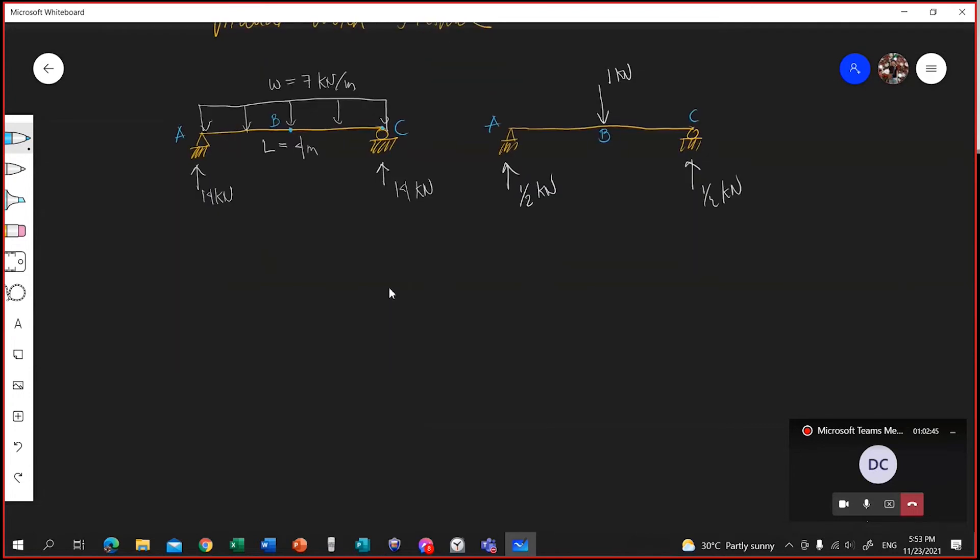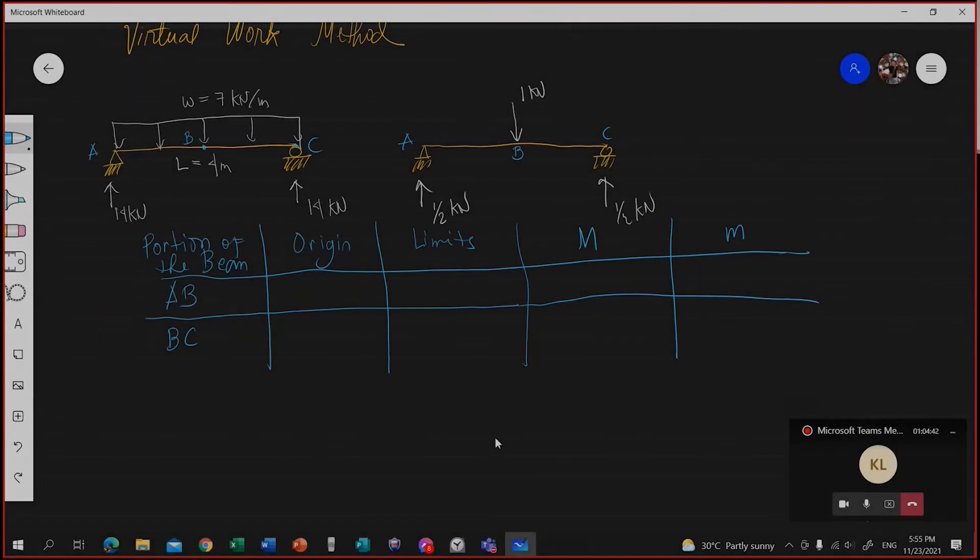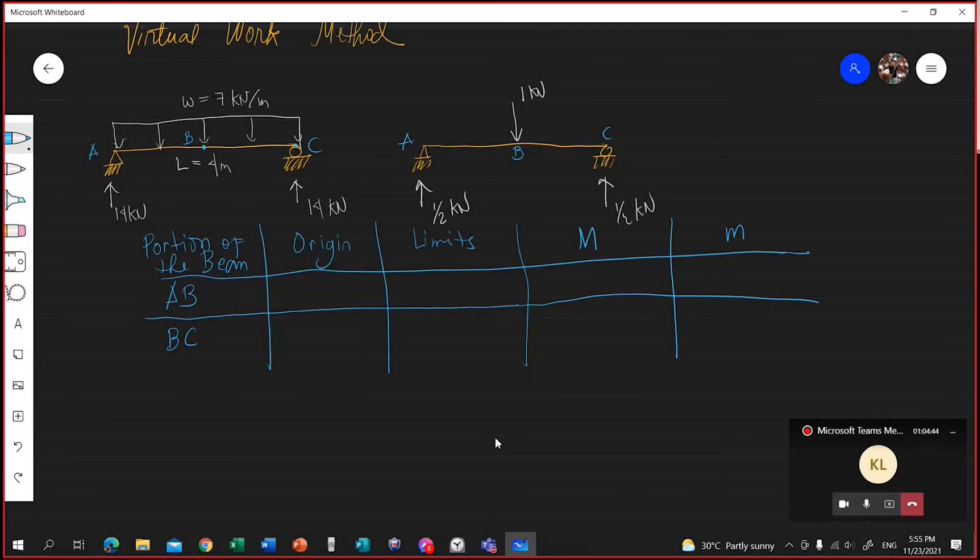Let me draw the table. So the first thing when solving with the virtual work method, what I think is the abbreviation POLM. Capital letter M. So portion of the beam, origin, limit, capital letter M, and small letter m. So portion of the beam is the segment.